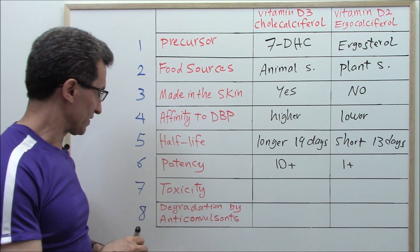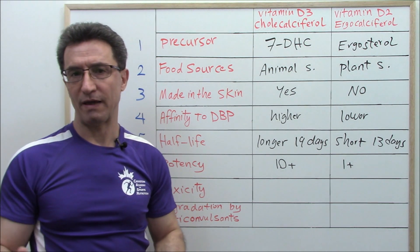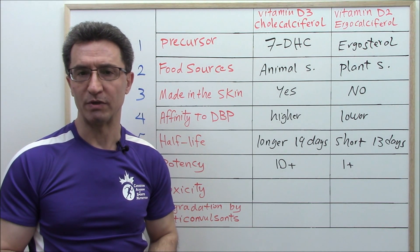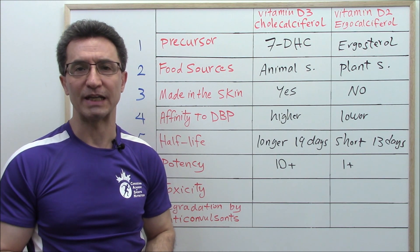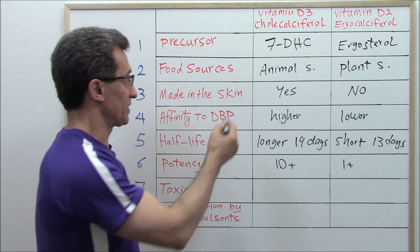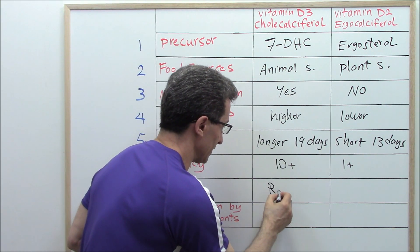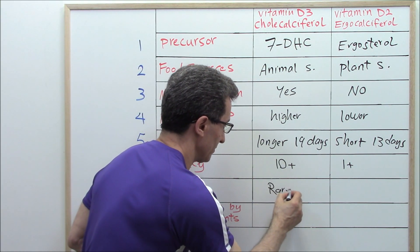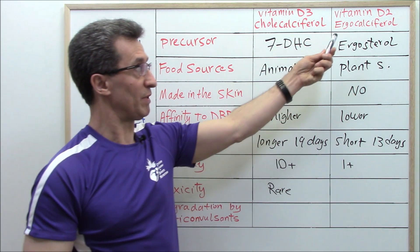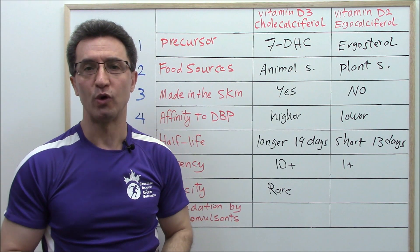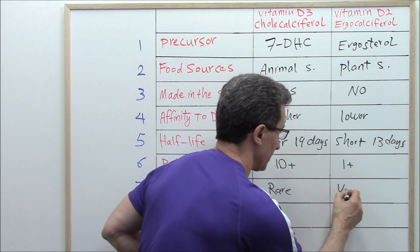Number seven: toxicity. The safety margin for vitamin D is large, which is why toxicity is not that common. The risk of toxicity with vitamin D3 is rare, and the risk of toxicity with vitamin D2 is even much lower than D3 — it's very rare.